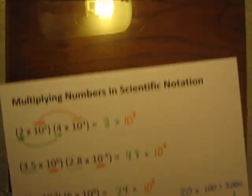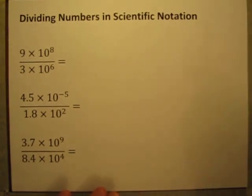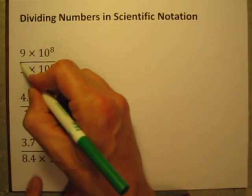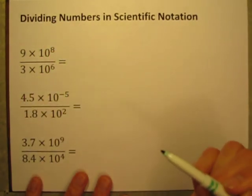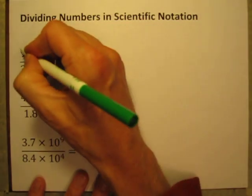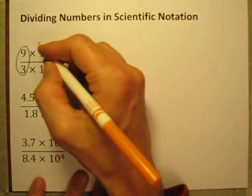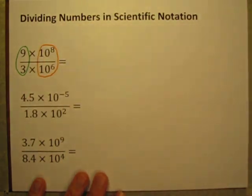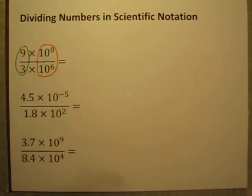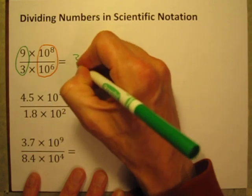How about dividing? Dividing, same thing, just about. When you're dividing, I have a power of 10 divided by, I'm sorry, a number in scientific notation divided by another number in scientific notation. Let's just break it up into 2 separate problems. Let's do 9 divided by 3, and 10 to the 8th divided by 10 to the 6th. 9 divided by 3 is 3.